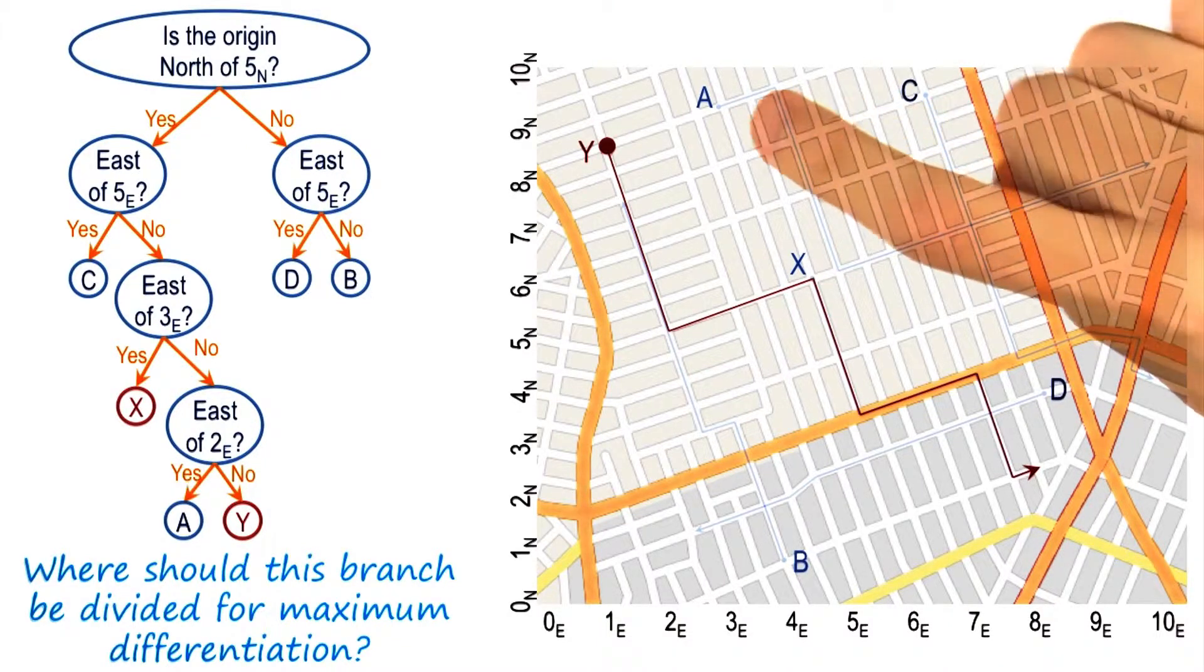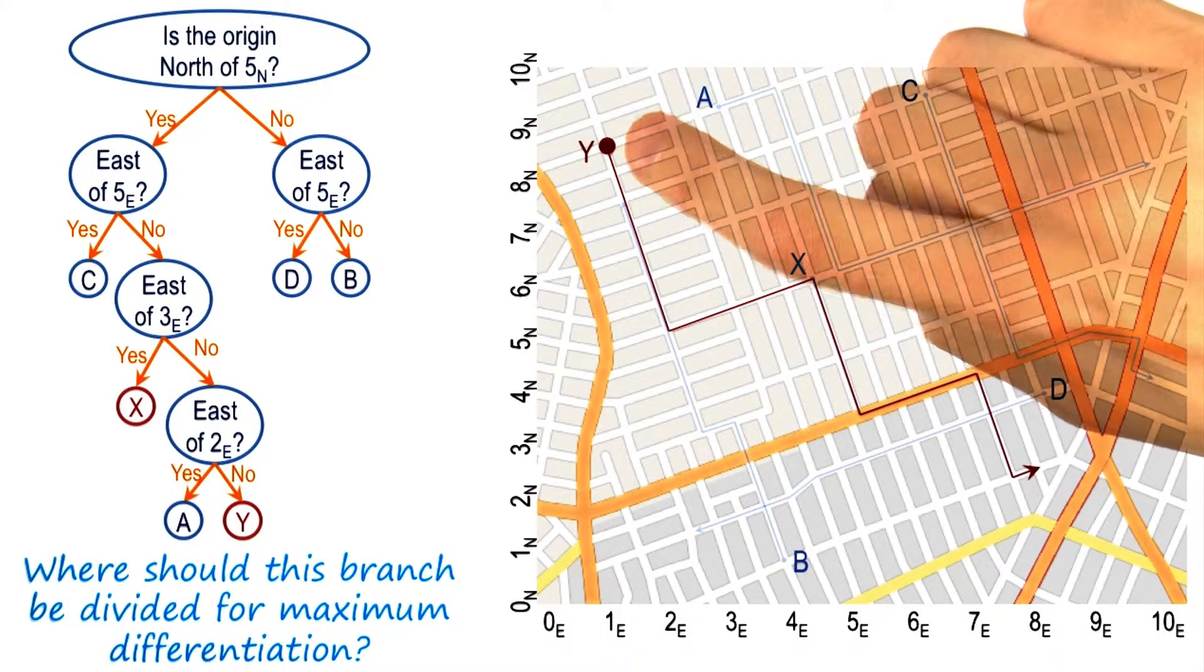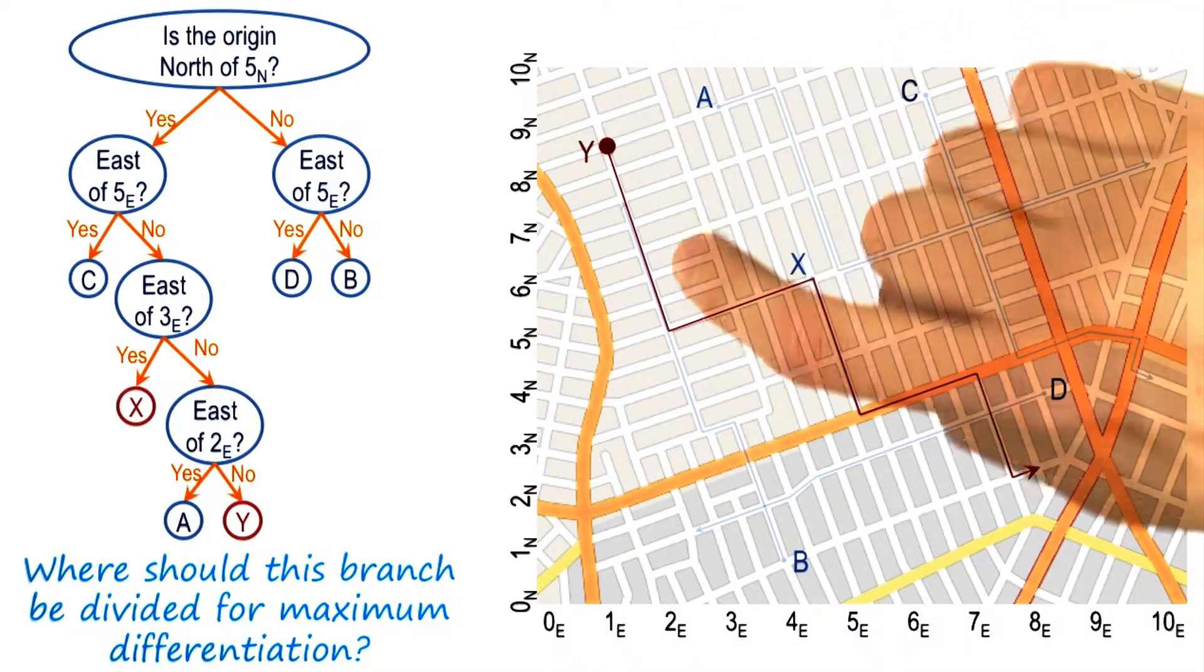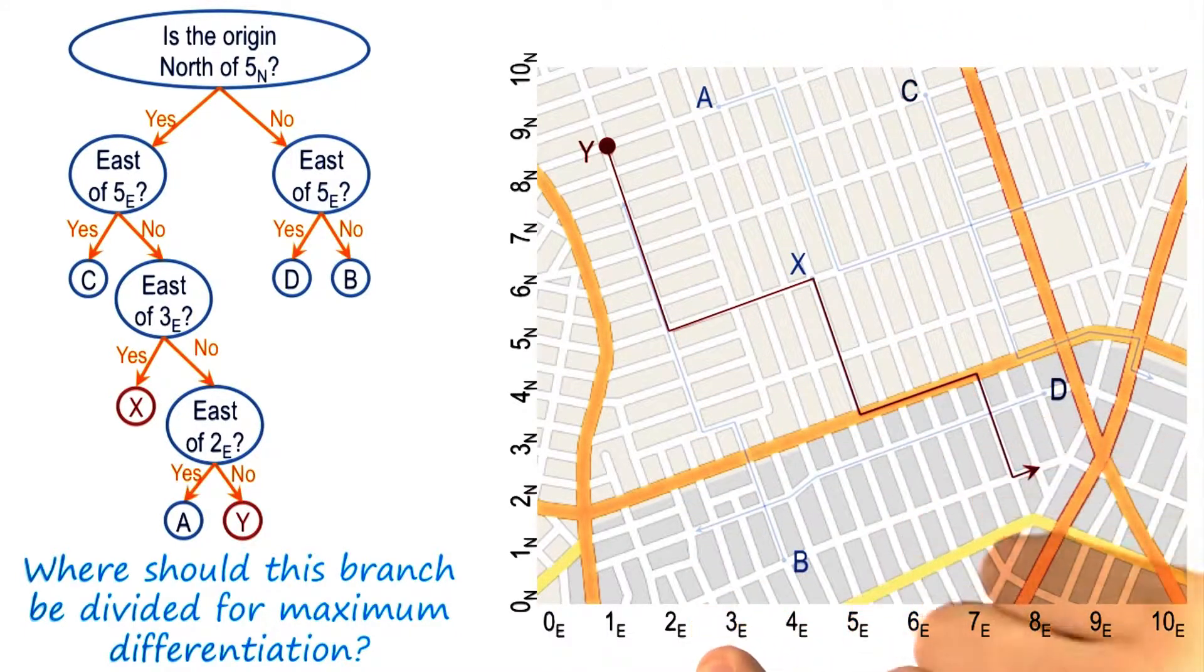What did you find, David? So we've got A right here and Y right here. We've got a line that goes through the two that differentiates them, that roughly lines up with 2E. So I said 2E. That looks like a good answer to me.